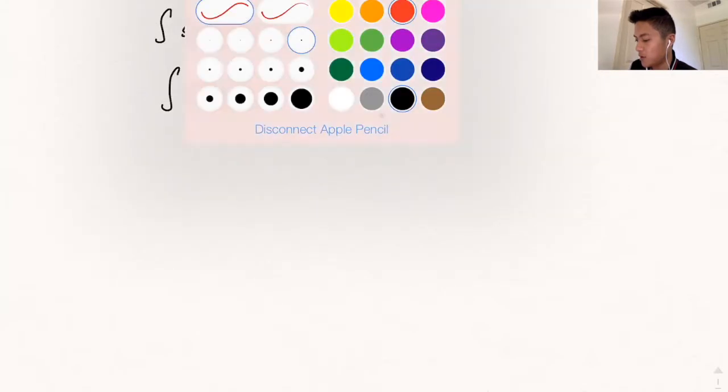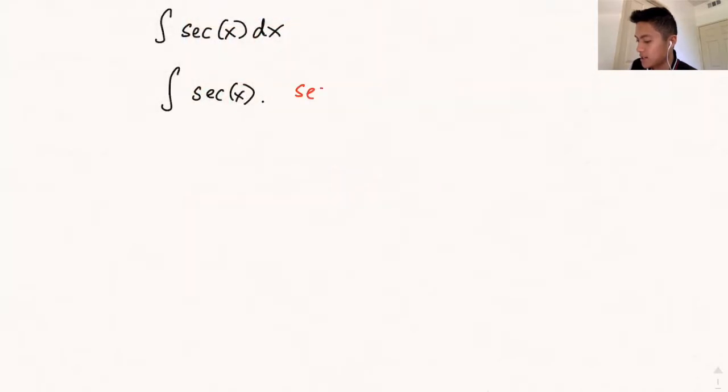And what's that clever form? Well, we're going to multiply it by secant of x plus tangent of x divided by secant of x plus tangent of x. And there's still a dx here.